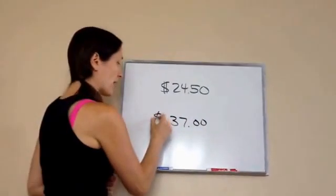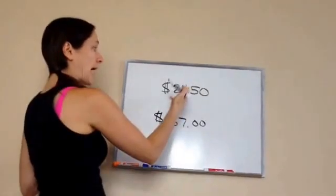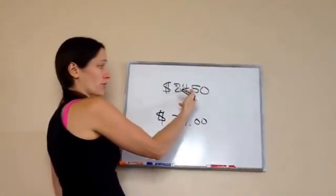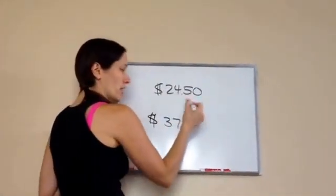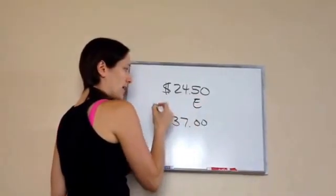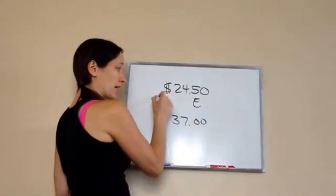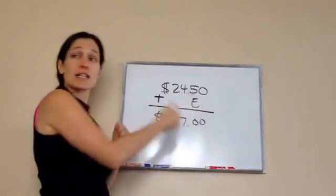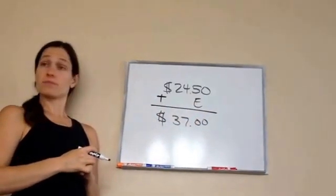So, I want to show you how I'm going to write this problem. He had, Ben had $24.50. Then he earned, and let's just put an E for that, he earned some more money. Then he ended up with $37. They want to know how much he earned.